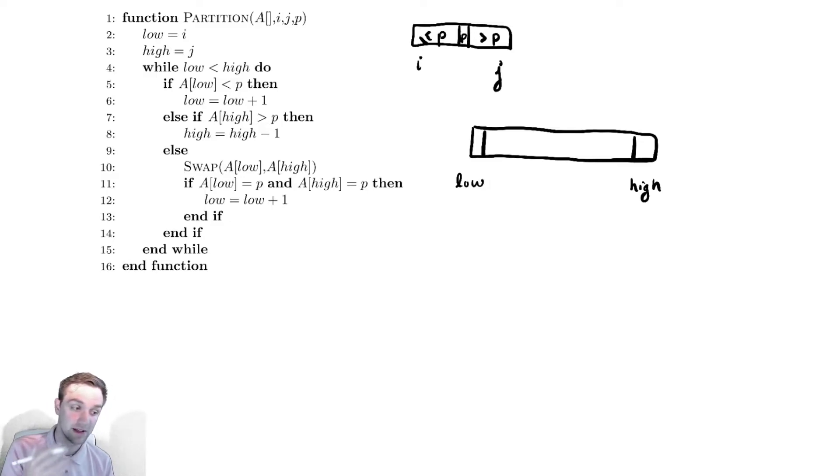Similarly, if the element at the high position is greater than p, we can move it to the left by one. If neither of those are true, it means this element is greater than or equal to p and the other element is less than or equal to p, so we swap those two around. Then this element would be less than or equal to p and the other element would be greater than or equal to p.